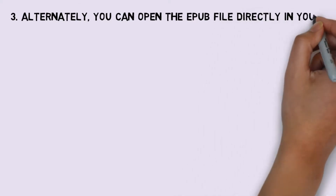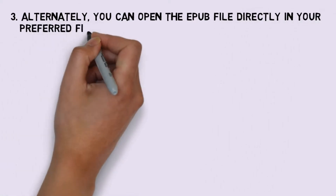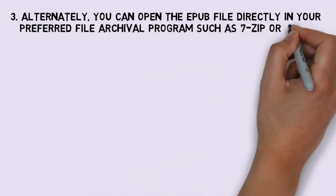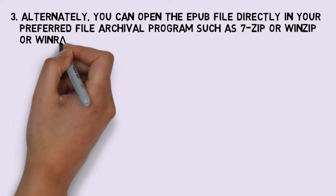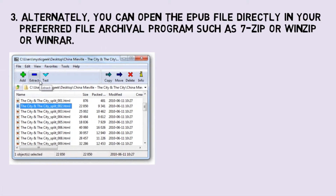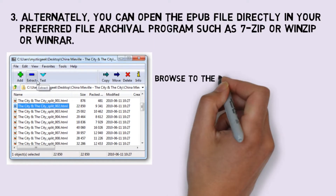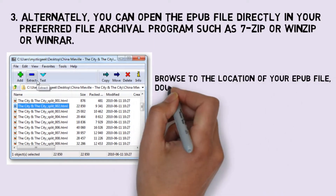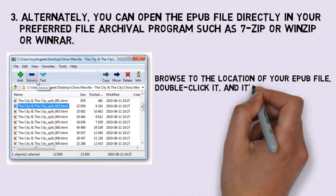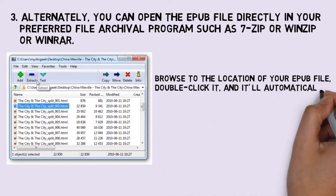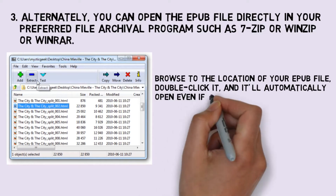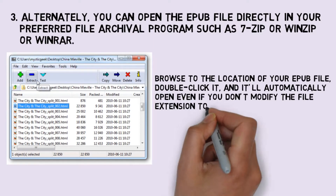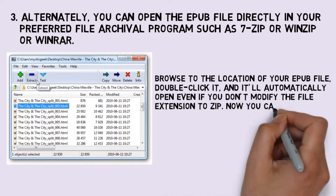Step 3: Alternately, you can open the EPUB file directly in your preferred file archival program, such as 7-Zip, WinZip, or WinRAR. Browse to the location of your EPUB file, double-click it, and it will automatically open even if you don't modify the file extension to ZIP. Now you can extract the folder or extract specific files as before.